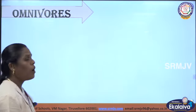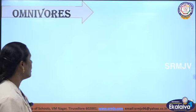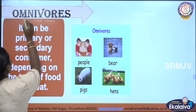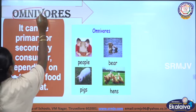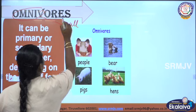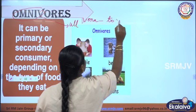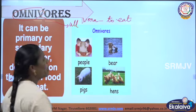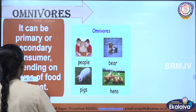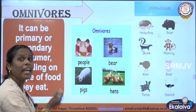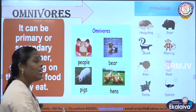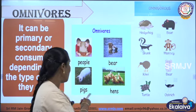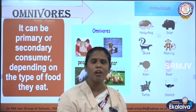Next is omnivores. 'Omni' means all and 'vora' means to eat — so omnivores eat both plants and animals. They can be primary or secondary consumers depending on the type of food they eat. Examples of omnivores include human beings, bears, pigs, hens, and kiwi.